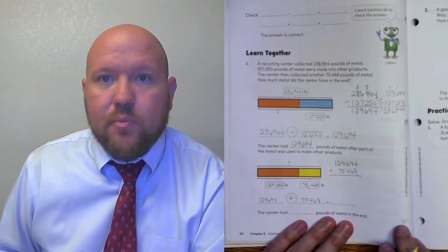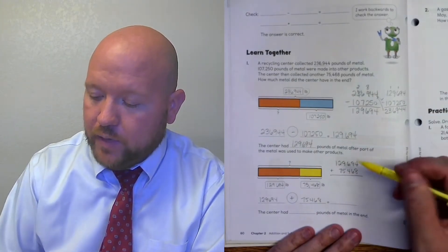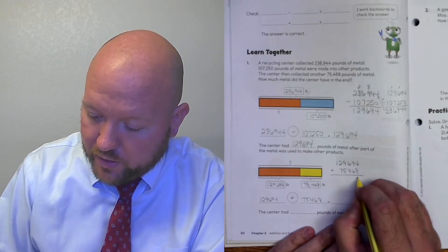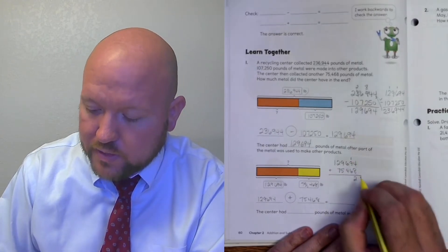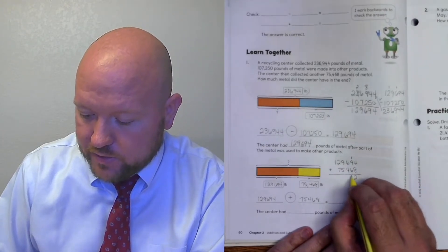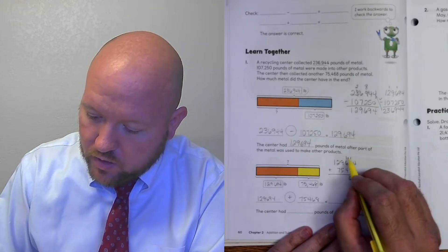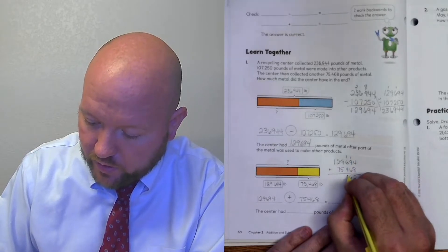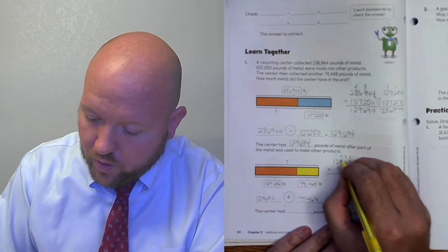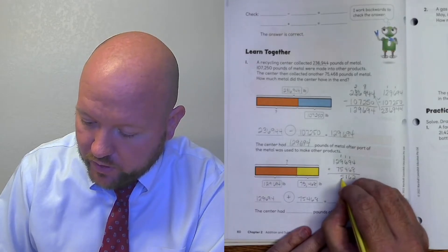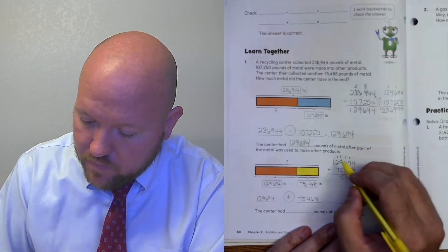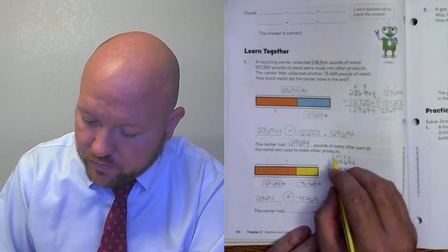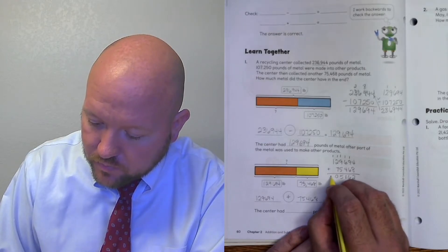All right. 129,694 plus 75,468. Now, dealing with all these numbers, make sure that we're being neat. Make sure we have everything nice and lined up. Make sure we're respecting place value. 4 plus 8 is 12. 1 plus 9 is 10. Plus 6 is 16. 1 plus, well, 4 and 6 and 4 make 10. Plus 1 is 11. 1 and 9 make 10. Plus 5 is 15. 1 and 2 make 3. 3 plus 7 is 10. And 1 and 1 make 2.